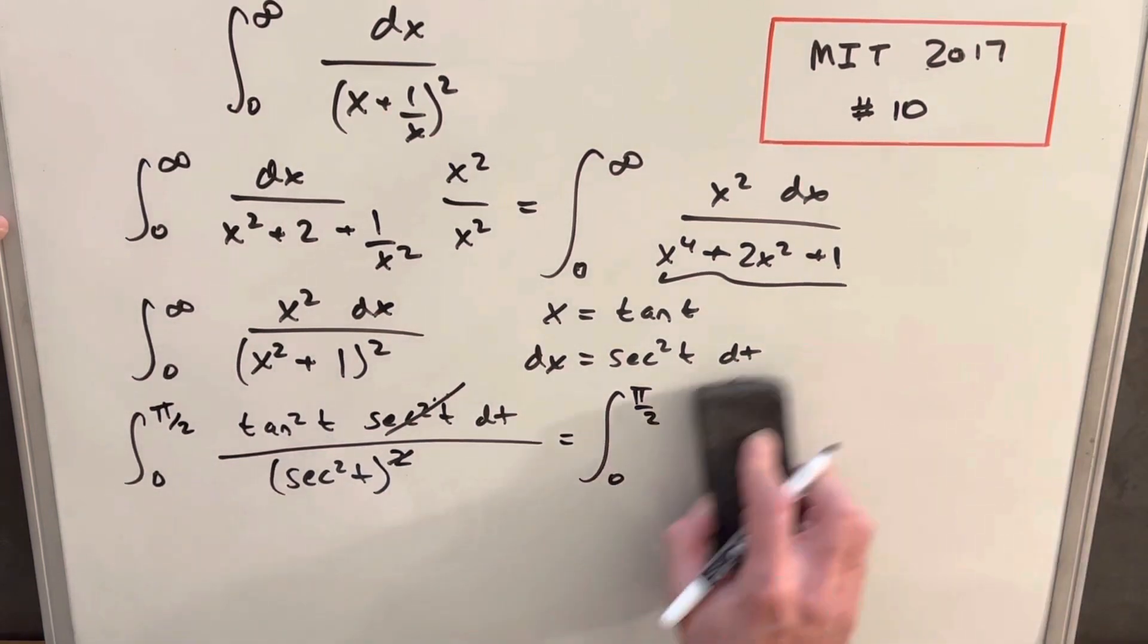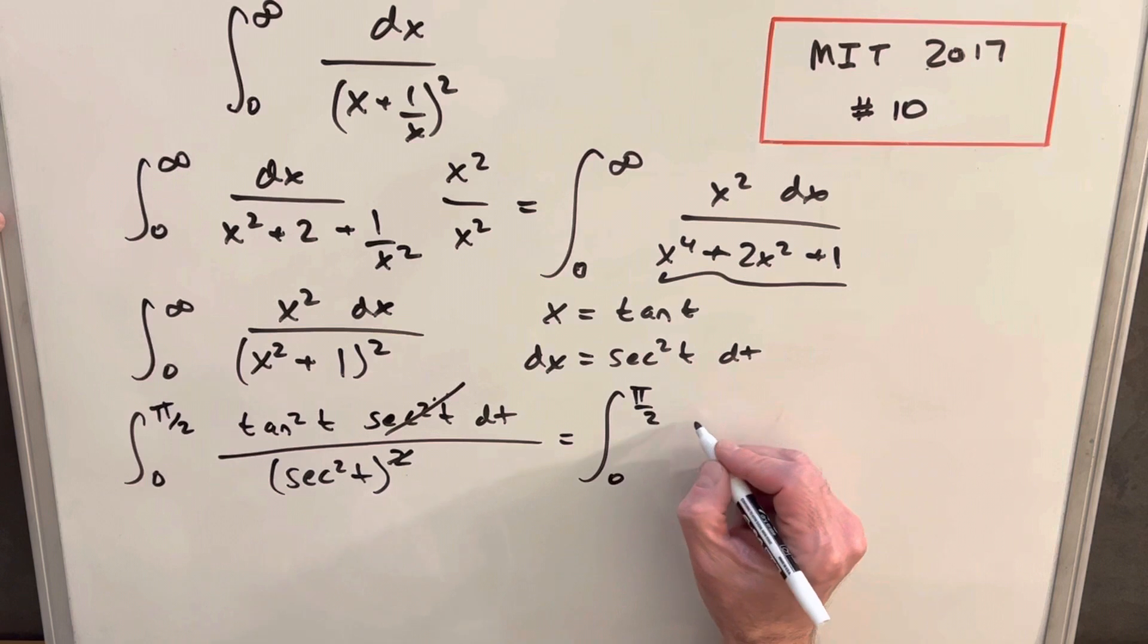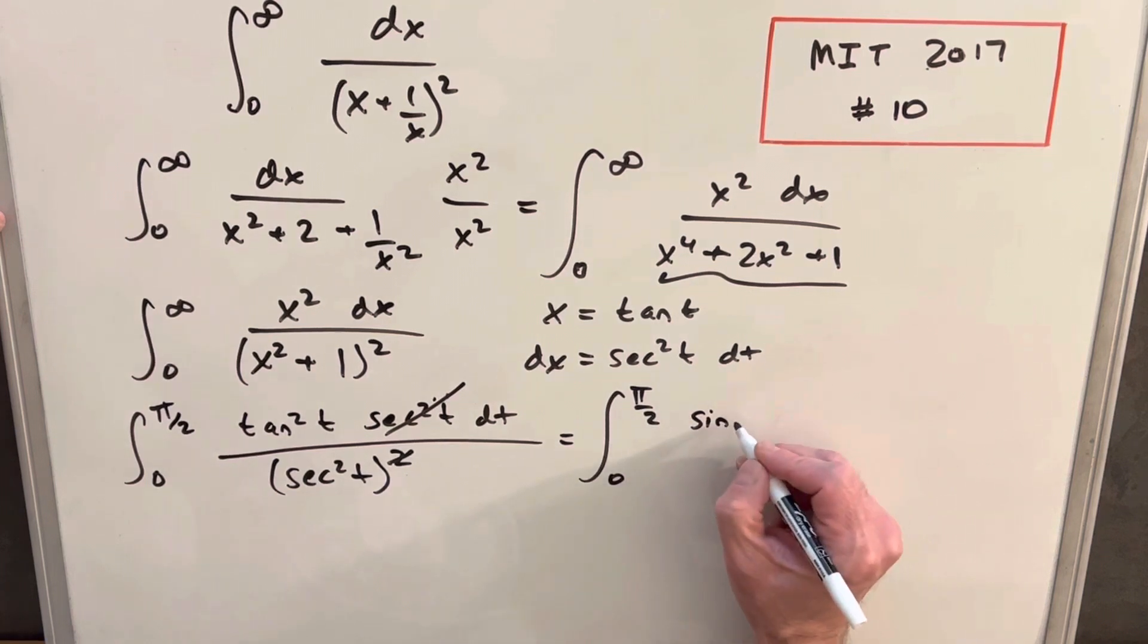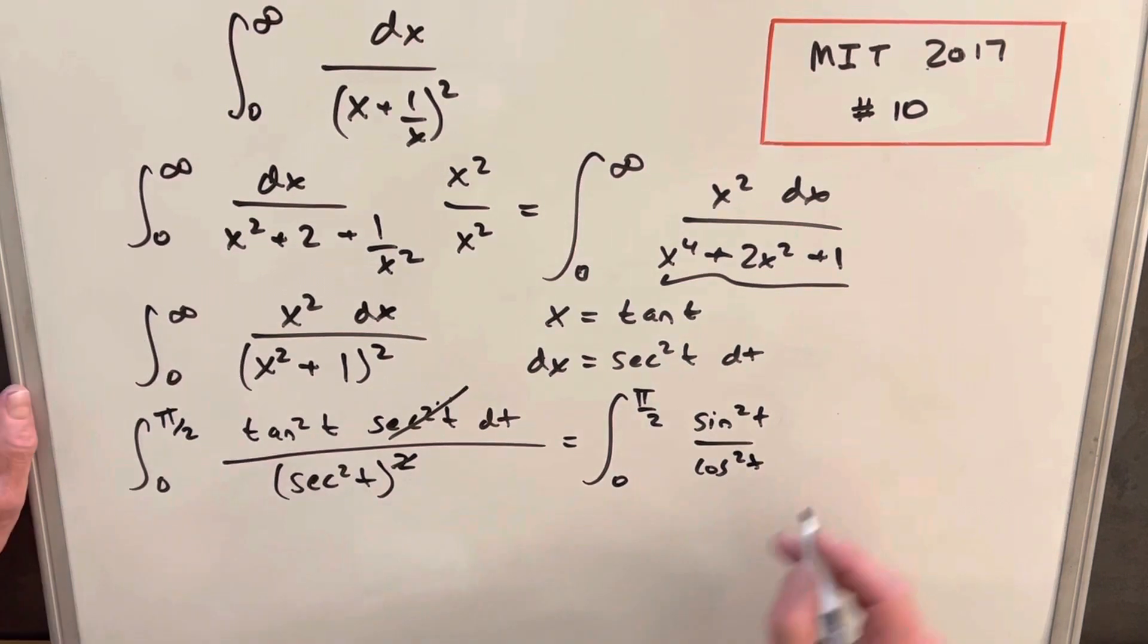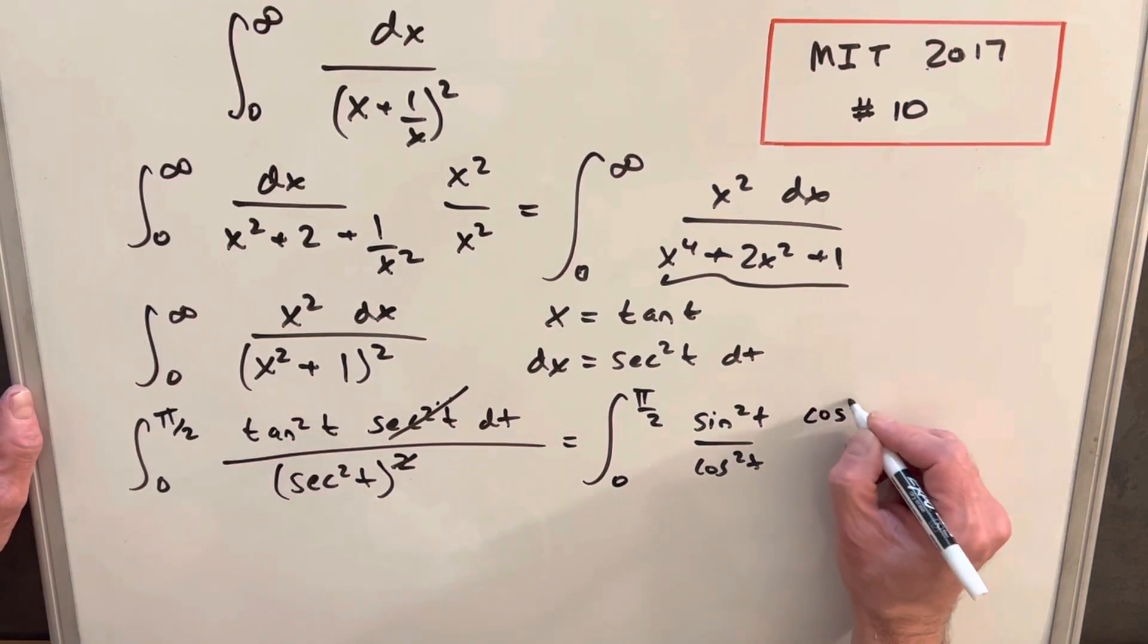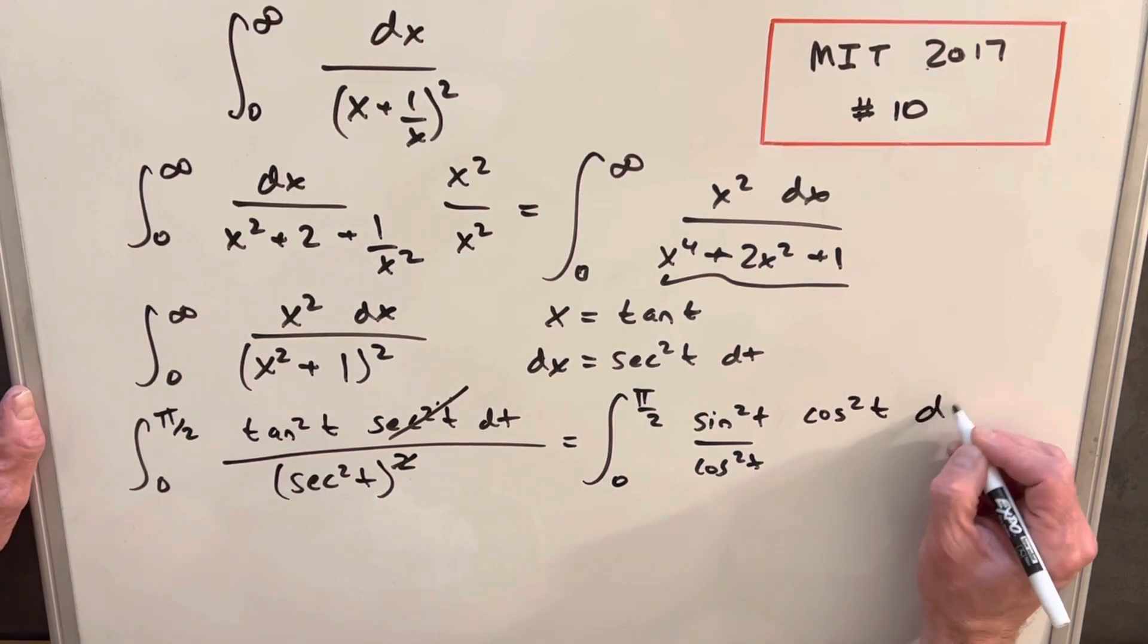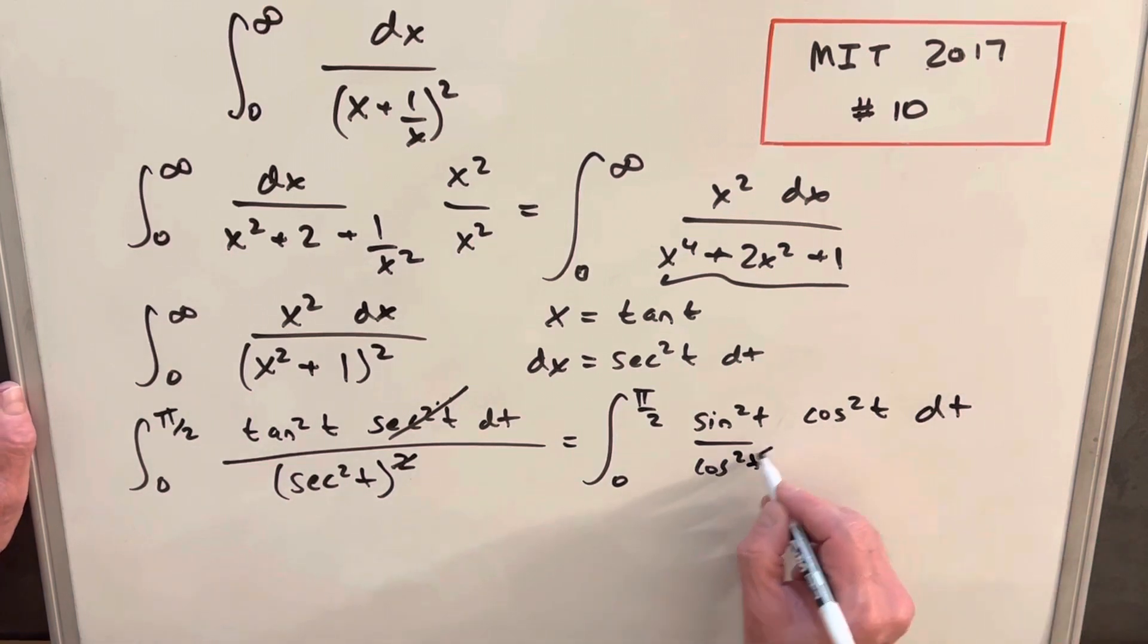And actually, let's write tan squared as sine squared t over cosine squared t. And then our secant squared is going to be cosine squared t dt. Clearly, these are going to cancel.